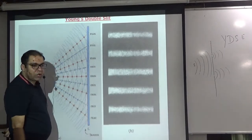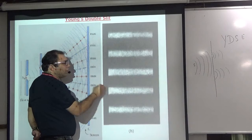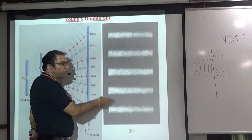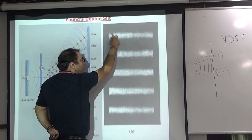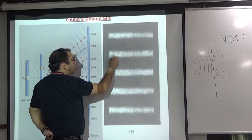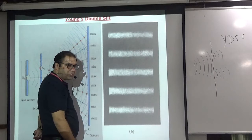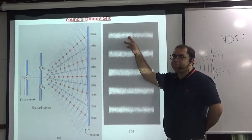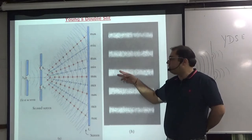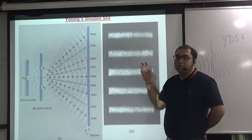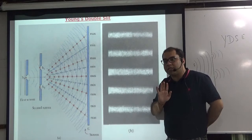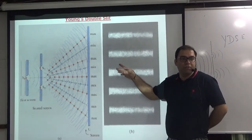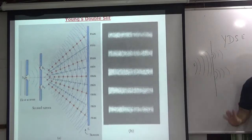If you see the pattern on the screen, it has a certain diagram. Where the maximum point is, there is a lot of light — a bright spot. Where it is minimum, there is a black spot. Maximum, minimum, maximum, minimum — so where the light is more it is called a bright band, and where less, a dark band. The band is called a bright fringe, dark fringe, bright fringe, dark fringe, and so on.